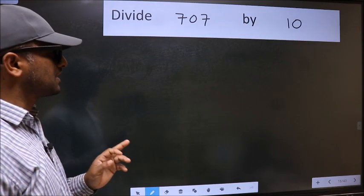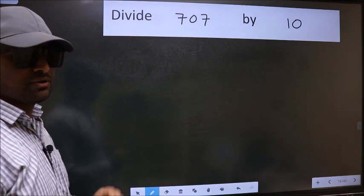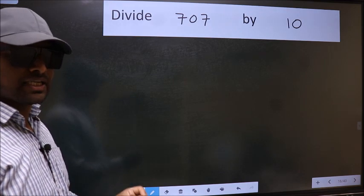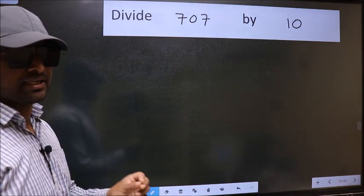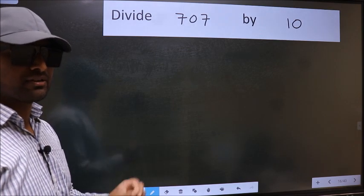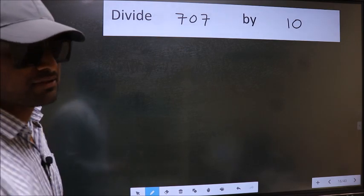Divide 707 by 10. While doing this division, many do this mistake. What is the mistake that they do? I will let you know. But before that, we should frame it in this way.